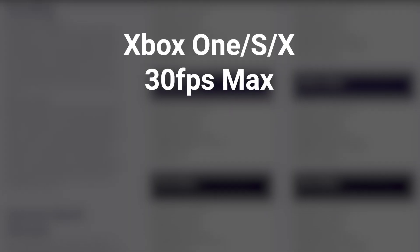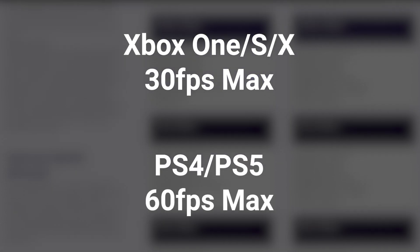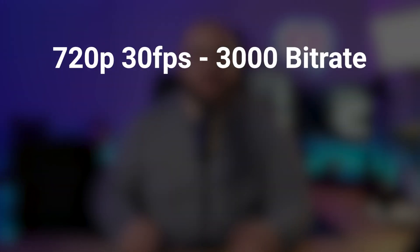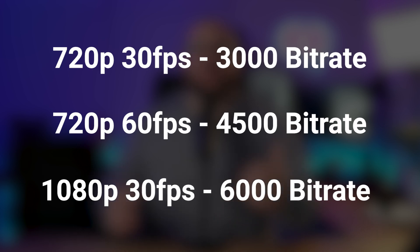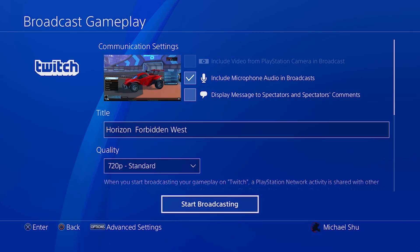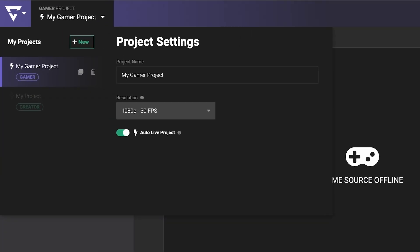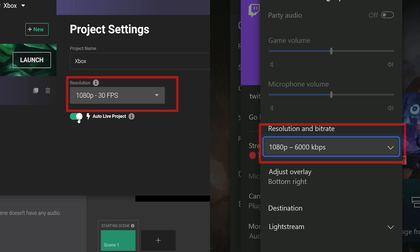Xbox streams are limited to 30 FPS from the console, where PlayStation users can stream 60 frames per second. Knowing this, we recommend 3000 bitrate for 720p 30 FPS, 4500 bitrate for 720p 60 FPS, and 6000 for 1080p 30 FPS streams. Make sure that your stream settings on your console match the resolution you chose for your Lightstream project. Check the link in the description for Twitch's recommendations if you need more guidance.